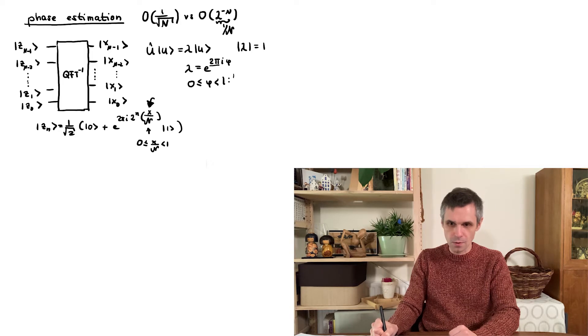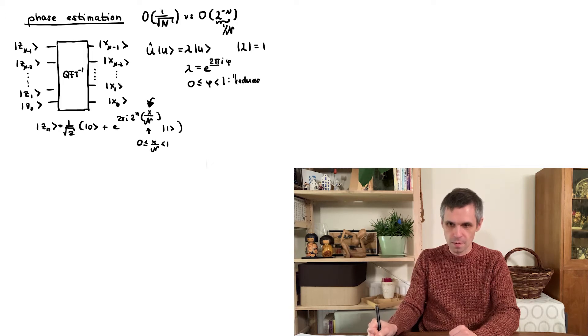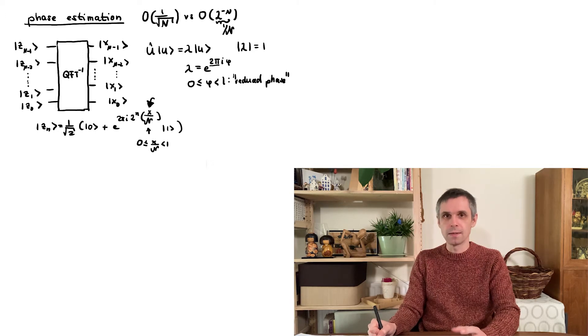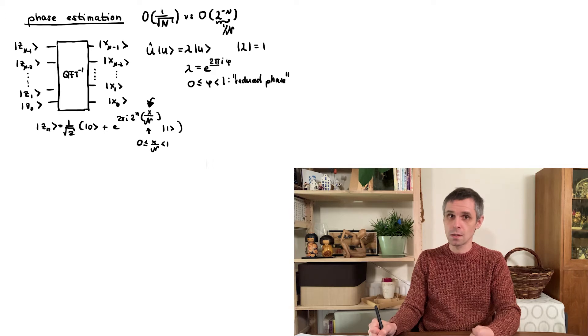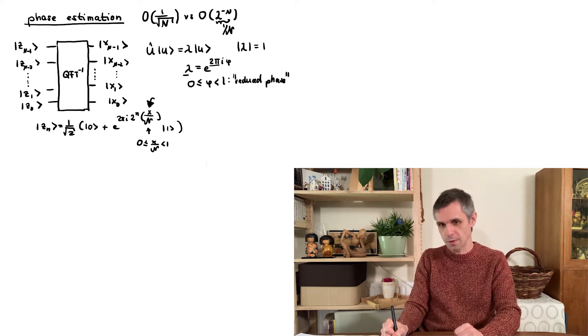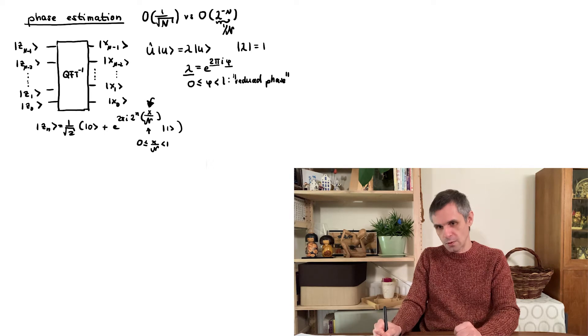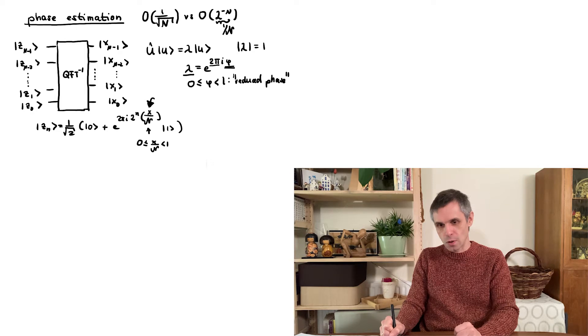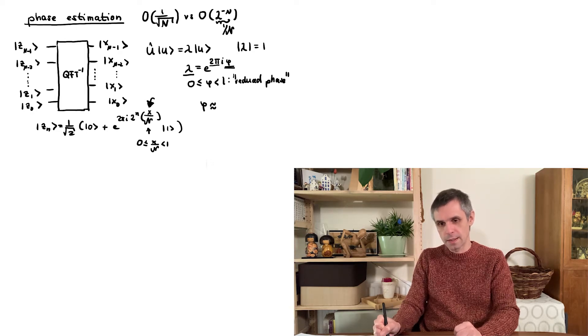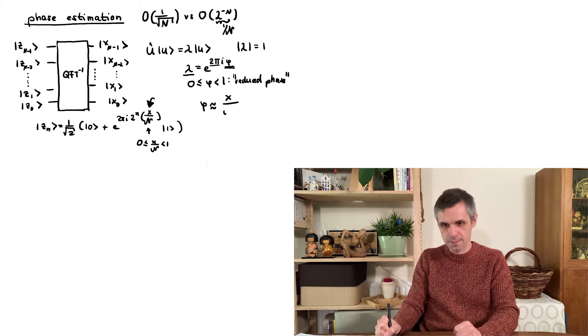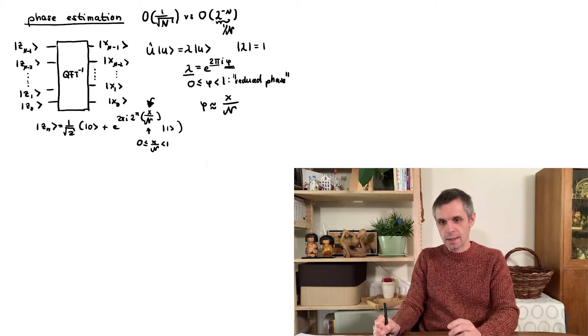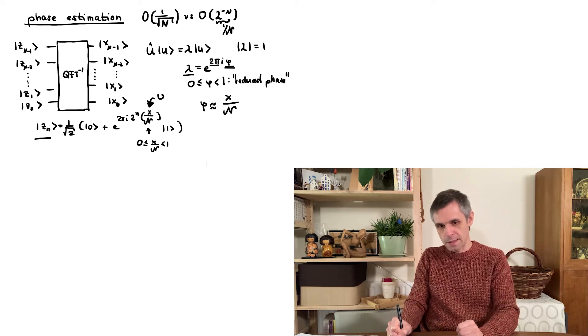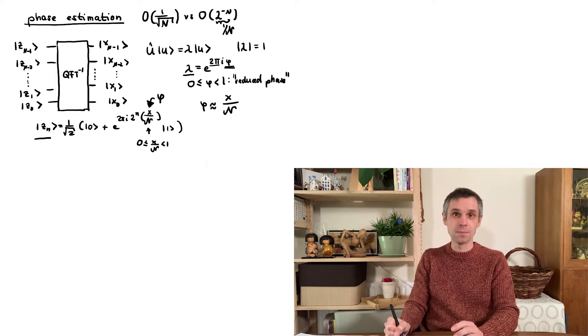We can write it in this way because when we add integers to this, this doesn't change our eigenvalue lambda. This phase phi here in the most general case is a real number. But in phase estimation, we aim to obtain an n-bit approximation for it, namely this approximation here. And this we can achieve when we can bring our quantum bits here into these kind of states where x divided by curly n is simply replaced by phi.